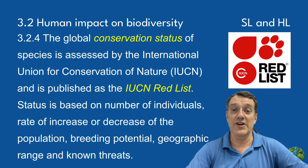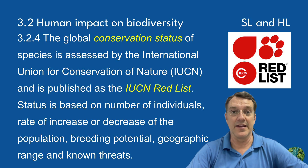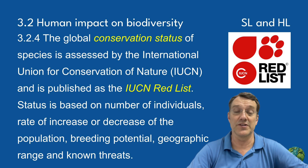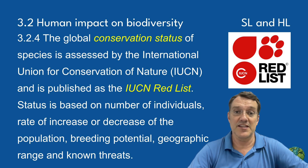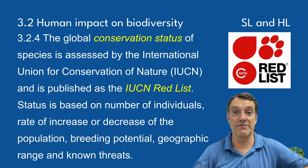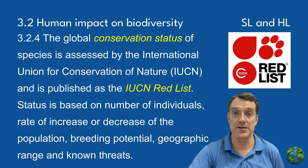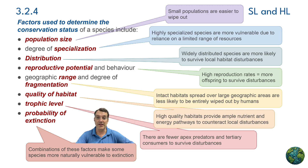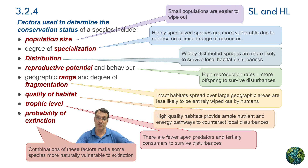The International Union for Conservation of Nature, or IUCN, assesses the global conservation status of species through its famous Red List. This assessment system standardizes how we evaluate extinction risk based on scientific criteria, including population size, the rate that population size changes, breeding potential, geographic range, and known threats to that species. The IUCN status provides valuable information that allows governments, conservation organizations, and individuals to prioritize protection efforts and develop appropriate management strategies.